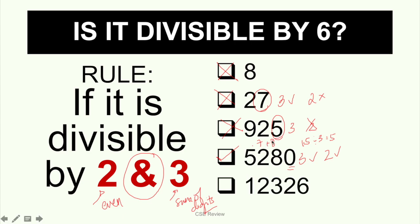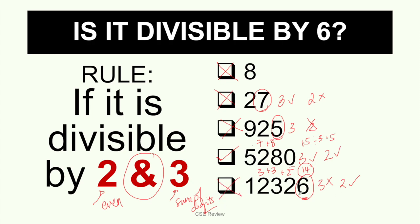Next number, 12326: check if it's divisible by 3 and 2. It works for 2 because 6 is the last digit — it's even. So we add the digits: 1 plus 2 is 3, plus 3 is 6, plus 2 is 8, plus 6 is 14. Since 14 is not divisible by 3, this is not divisible by 6 either. It's really easy once you know what you're looking for. If you're reducing a fraction to lowest terms or finding a square root, you can go straight to 6 instead of checking 3 and 2 separately — though using smaller ones is fine too. Knowing this technique makes dividing faster.